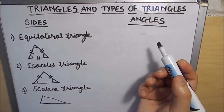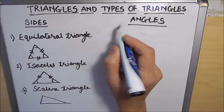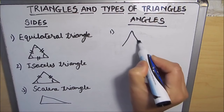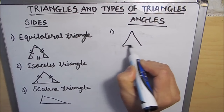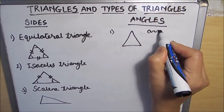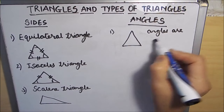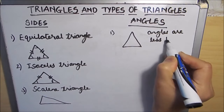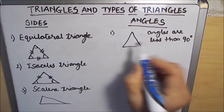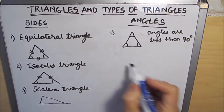Triangles are also classified according to their angles. If all the angles of a triangle are less than 90 degrees, it is called an acute angled triangle.